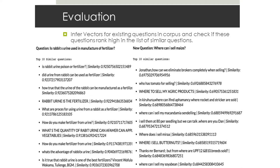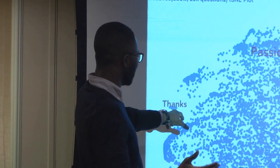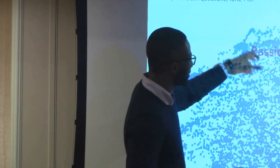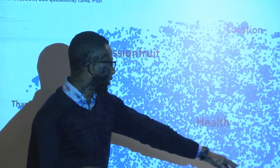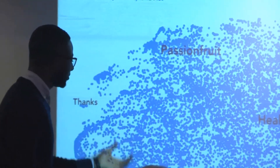The next thing I did to understand more of what was going on in my dataset was applied T-SNE. It did a good job in terms of putting similar questions together. For instance, questions saying 'thank you, thanks, thanking you' were grouped; these questions are about passion fruits; they're talking about location - Kenya, Nairobi; dairy and milk; health like diseases, treatment, sickness. So it did a reasonable enough job.